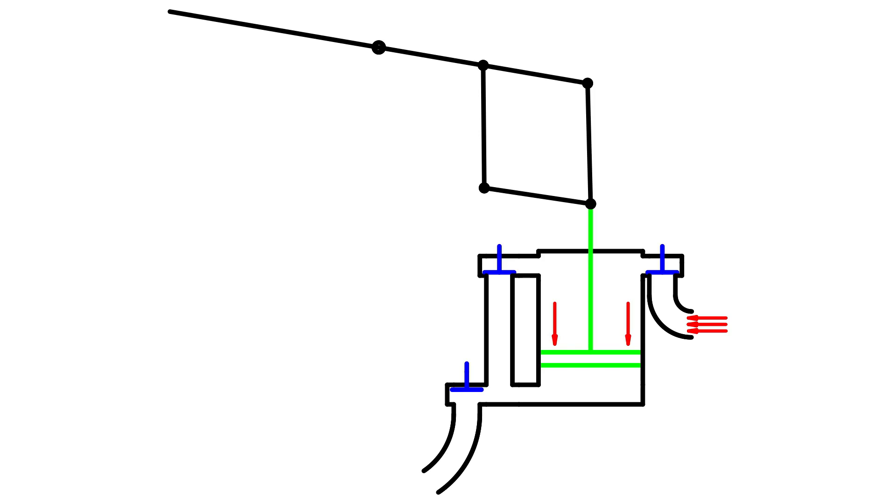The steam valve is closed at about half of the piston stroke. The steam in the cylinder expands. The piston continues to go down. Pressure decreases.